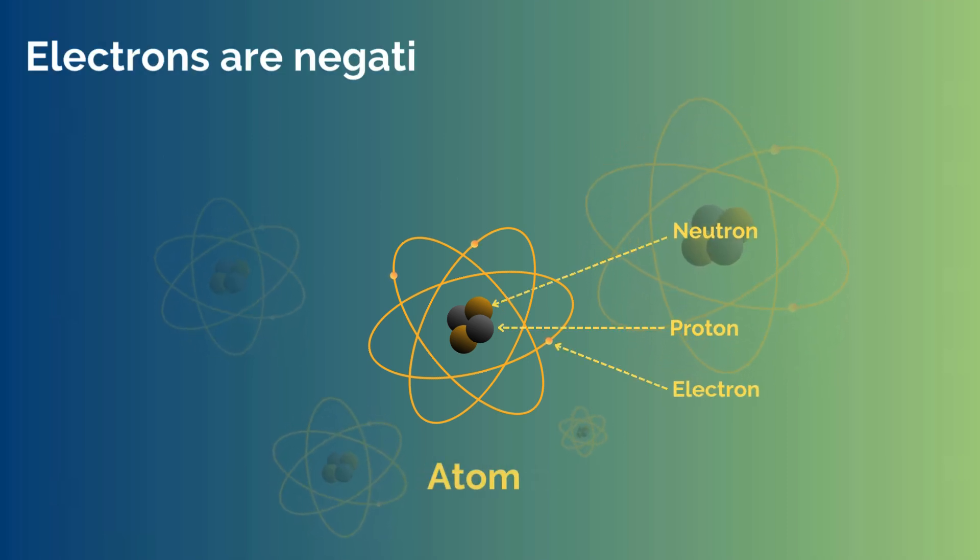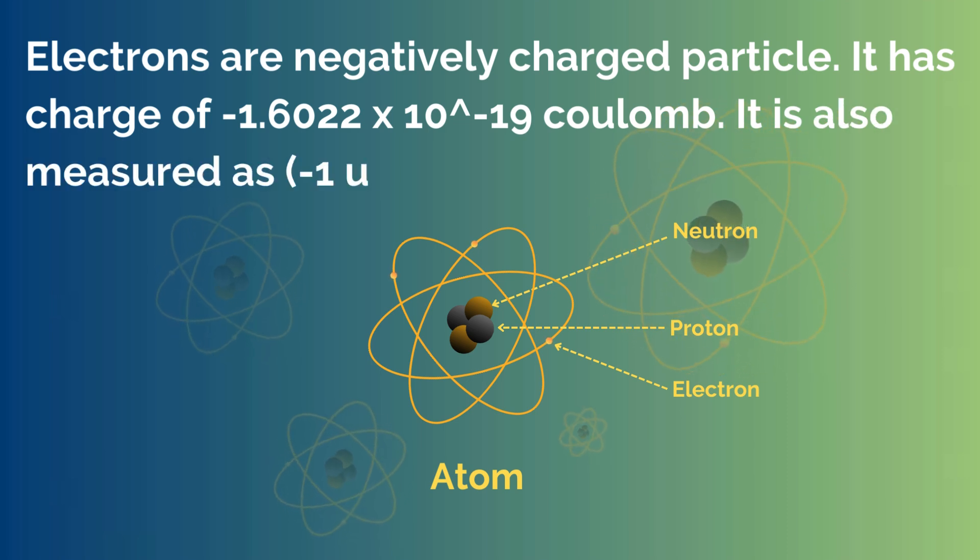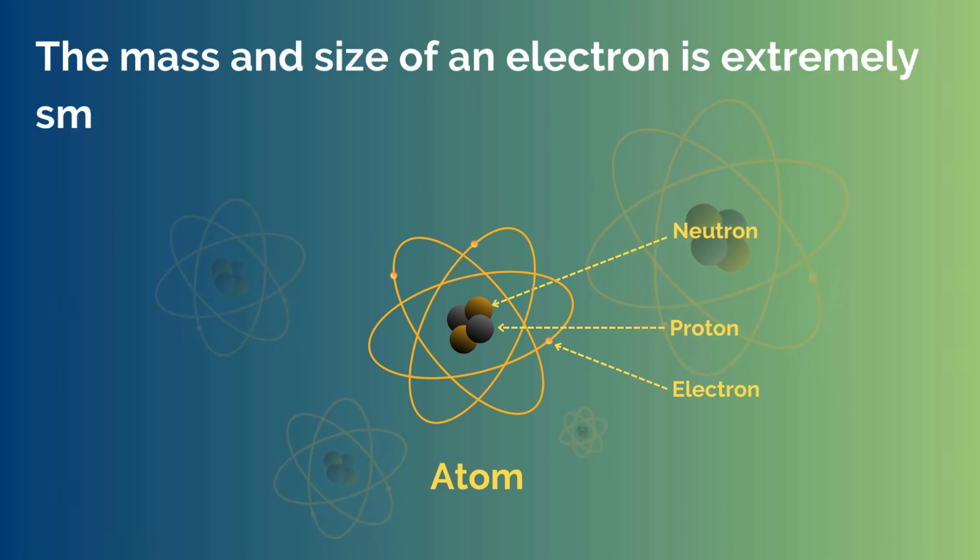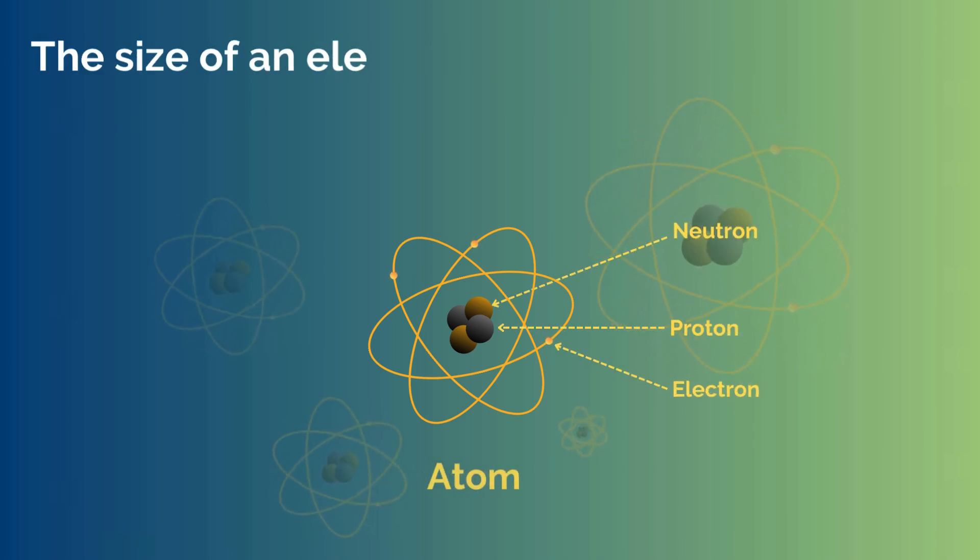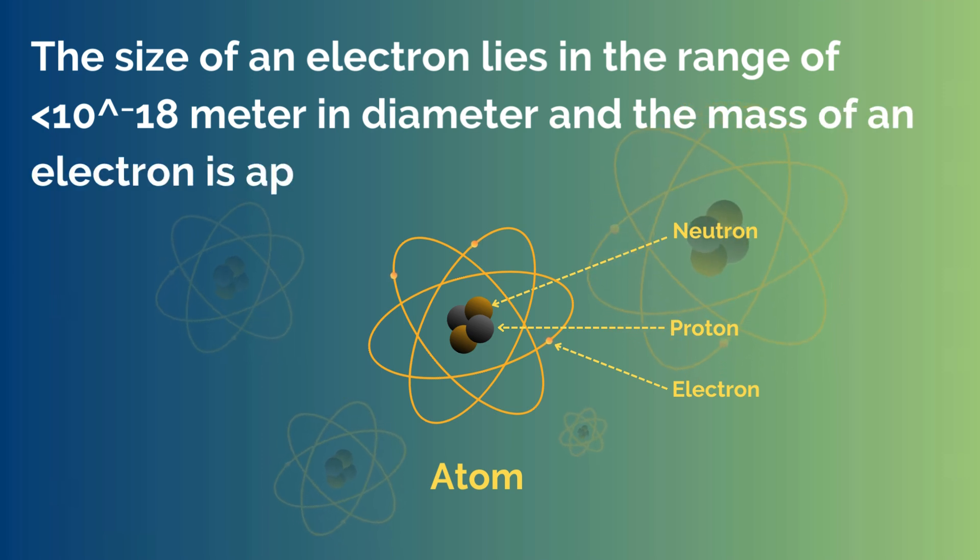Electrons are negatively charged particles. It has a charge of minus 1.6 times 10 to the power of minus 19 Coulombs. It is also measured as minus 1 unit charge. The mass and size of an electron is extremely small. The size of an electron lies in the range of less than 10 to the power of minus 18 meters in diameter. And the mass of an electron is approximately 9.1 times 10 to the minus 31 kilograms.